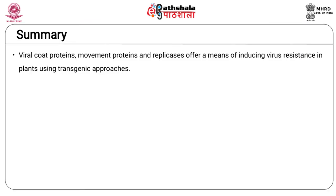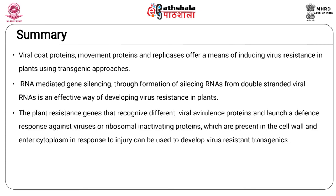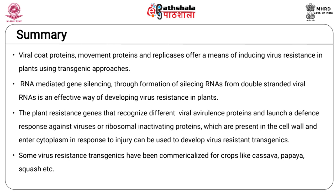The module can be summarized as follows: viral coat proteins, movement proteins, and replicases offer a means of inducing virus resistance in plants using transgenic approaches. RNA mediated gene silencing through formation of silencing RNAs from double-stranded viral RNAs is an effective way of developing virus resistance in plants. The plant resistant genes that recognize different viral avirulence proteins and launch a defense response, or ribosomal inactivating proteins which are present in the cell wall and enter the cytoplasm in response to injury, can be used to develop virus resistant transgenics. Some virus resistant transgenics have been commercialized for crops like cassava, papaya, and squash.